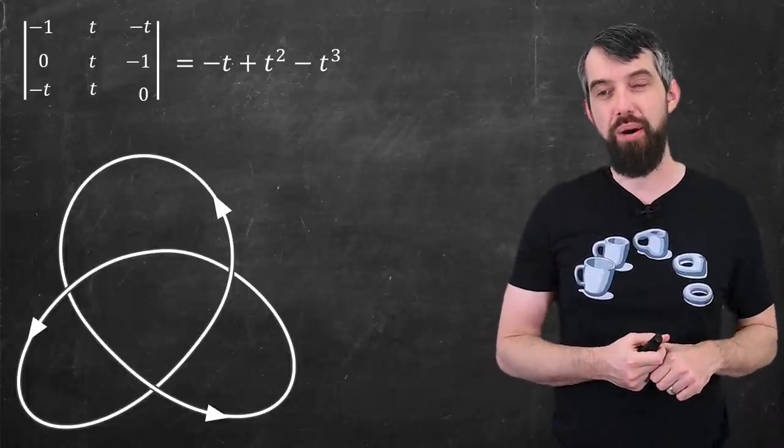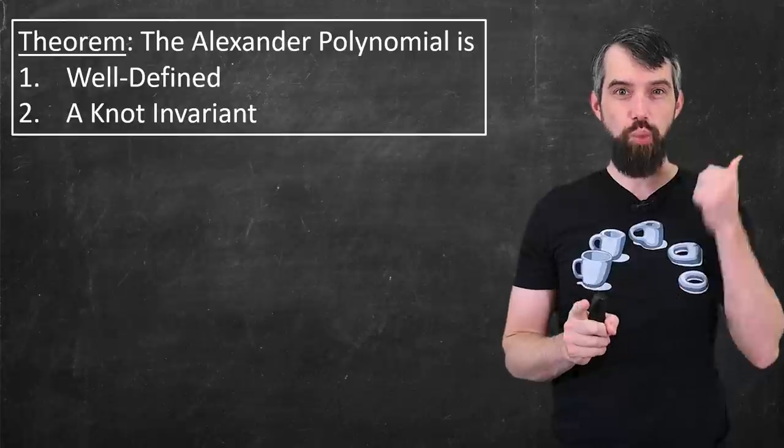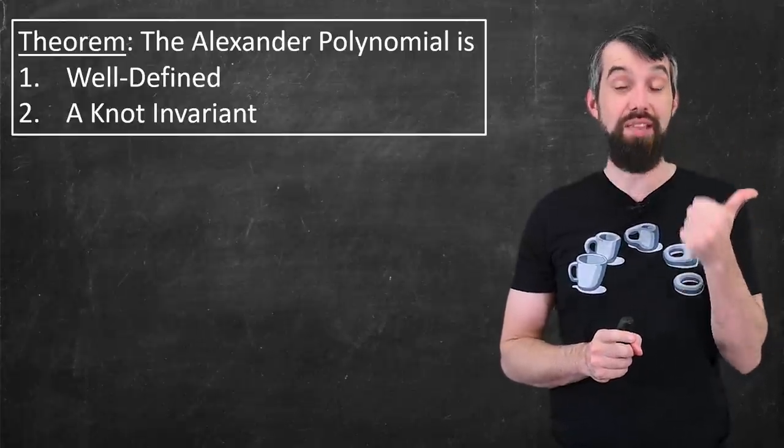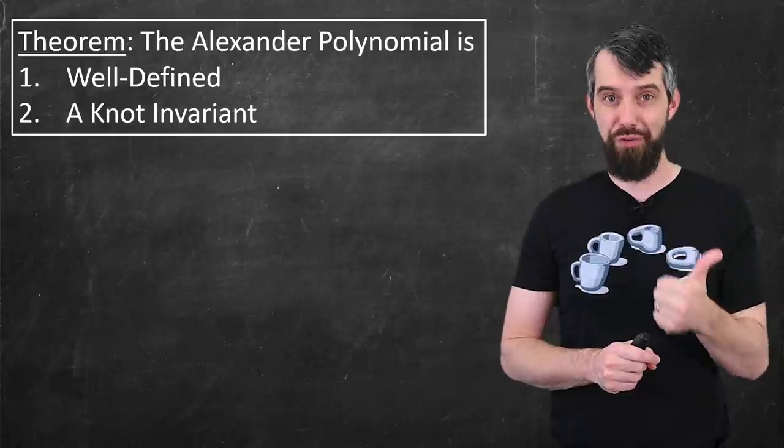Well, it's because of the following theorem. The Alexander polynomial is one, well defined, and two, a knot invariant. So what do I mean by well defined?